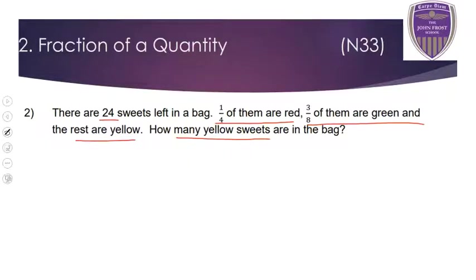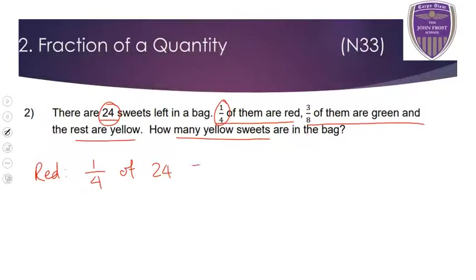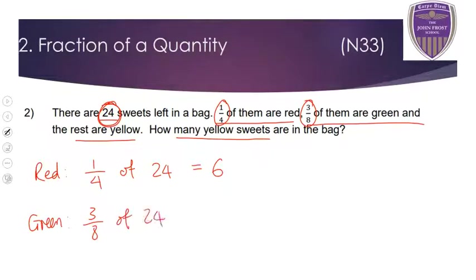We know how many sweets there are in total but not how many are red or green, so we need to work those out. For red, we're doing one quarter of 24. One quarter of 24 is 24 divided by 4, which is 6. 6 times by 1 is still 6. For green, three eighths of 24 — 24 divided by 8 is 3, and 3 times 3 is 9. So there are nine green sweets.